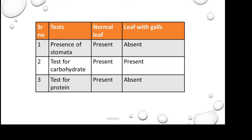We performed biochemical tests for carbohydrate and protein using standard procedures. We found that protein was absent in the leaf containing the GALs, and carbohydrates were present in both the normal leaf and the GALs.